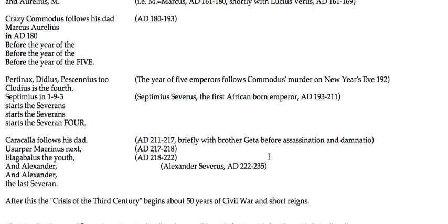Caracalla follows his dad, usurper Macrinus next. Elagabalus for you, and Alexander — the last Severin. At the end of that, you start the crisis of the third century and the breakdown of things.